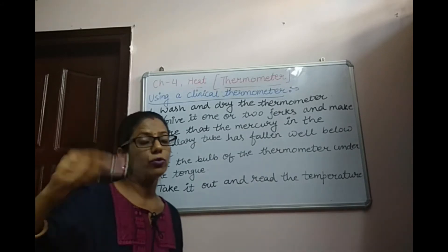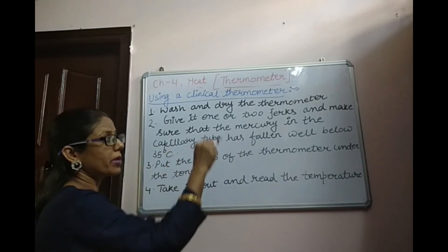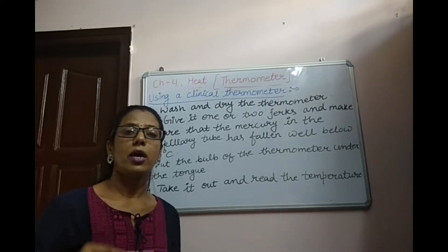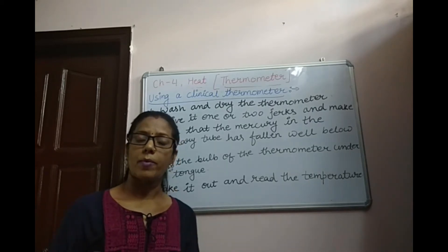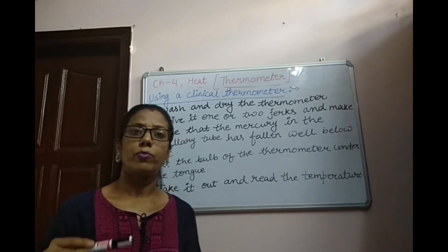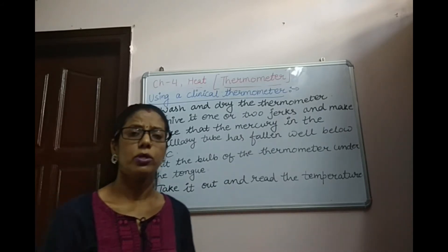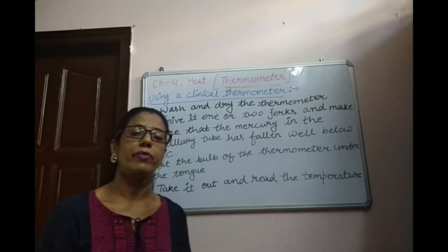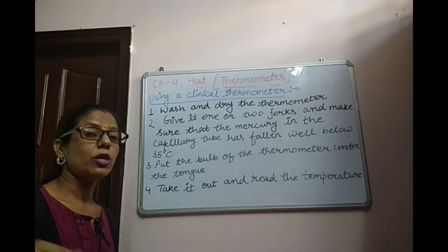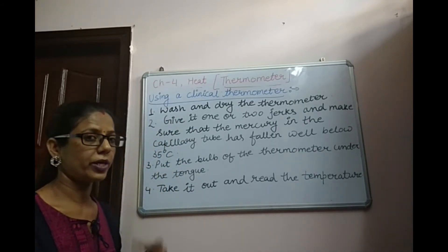Before using, we have to give jerks because the kink present above the bulb prevents the mercury level from falling back below 35 degree Celsius when we take the thermometer out of the patient's mouth. So by giving jerks, the mercury can fall below 35 degree Celsius and we can use the thermometer again.